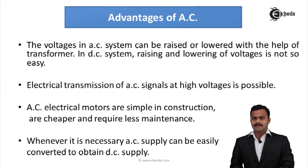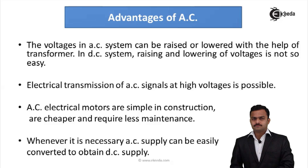Lastly, whenever I need a DC supply, I can get it from AC supply by using a rectifier. A rectifier is a device we are using everywhere nowadays which can convert AC supply to DC supply. So if I can get DC supply out of AC supply, the separate requirement of DC supply for most applications gets reduced. Hence, pertaining to these advantages, it is always beneficial to go for AC supply.